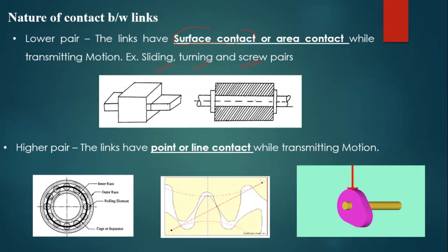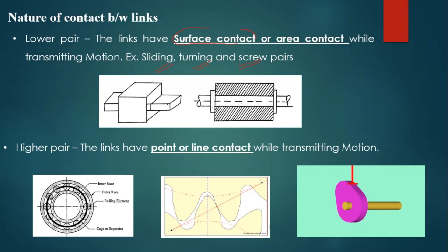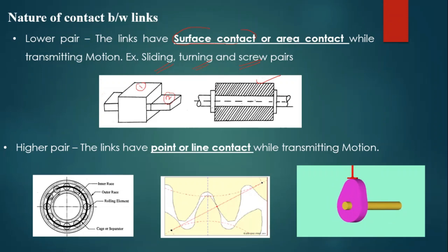Even screw pair, spherical pair, and turning pair fall under lower pair. For practical examples: shaft rotating in a bearing, or piston reciprocating in a cylinder. Here, link one is fixed and link two is reciprocating with respect to link one — this is surface contact.